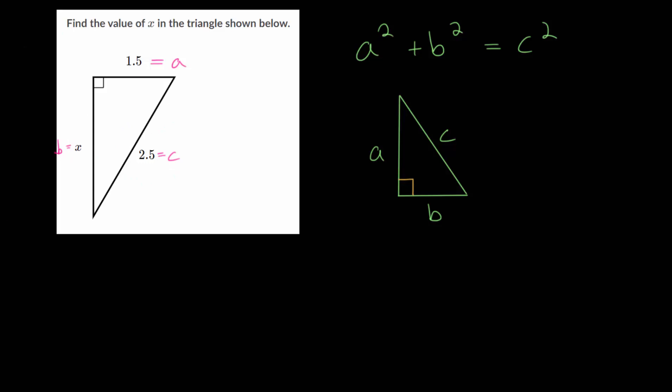So now that we've labeled these, let's start plugging them into our formula here. So we have A squared, so that will be 1.5 squared plus B squared. That is X in this case, so we have X squared. And this is equal to C squared, and C is 2.5.